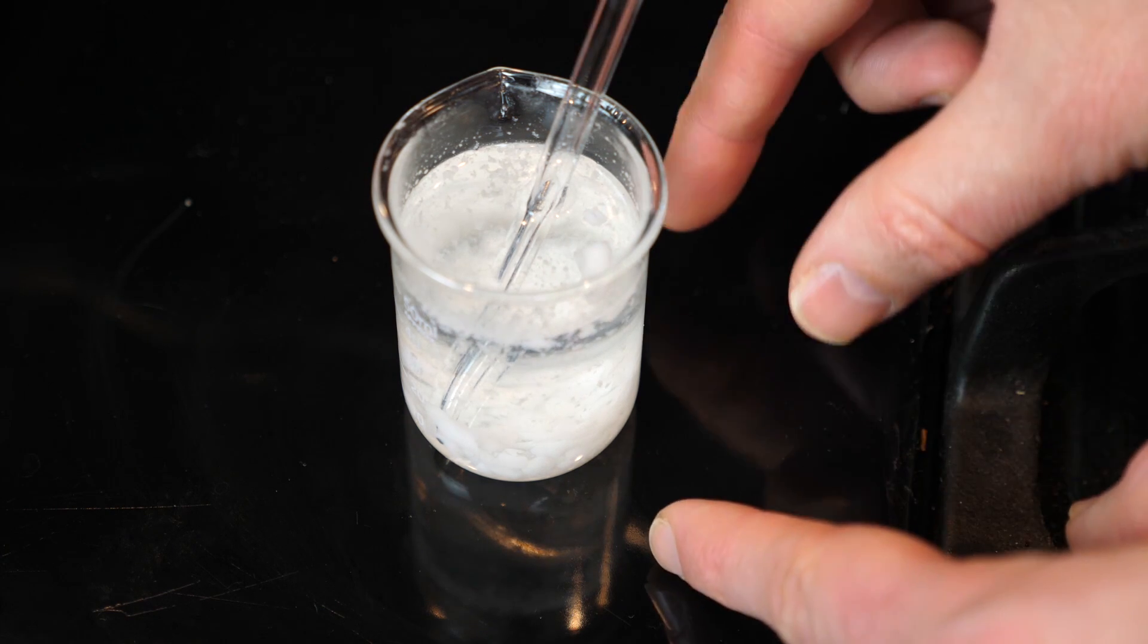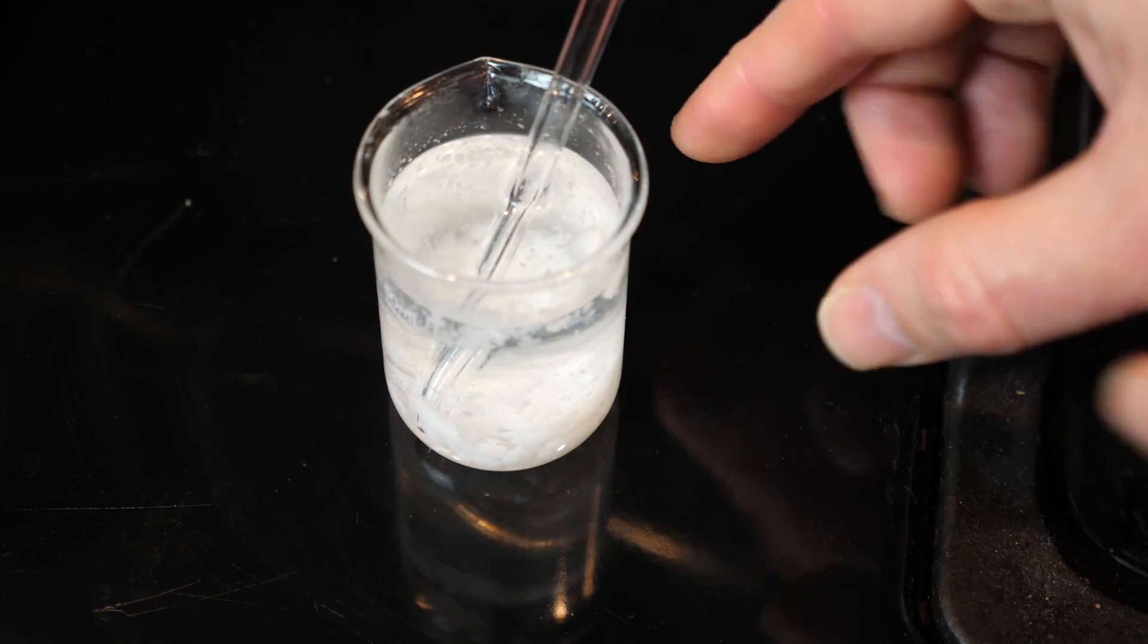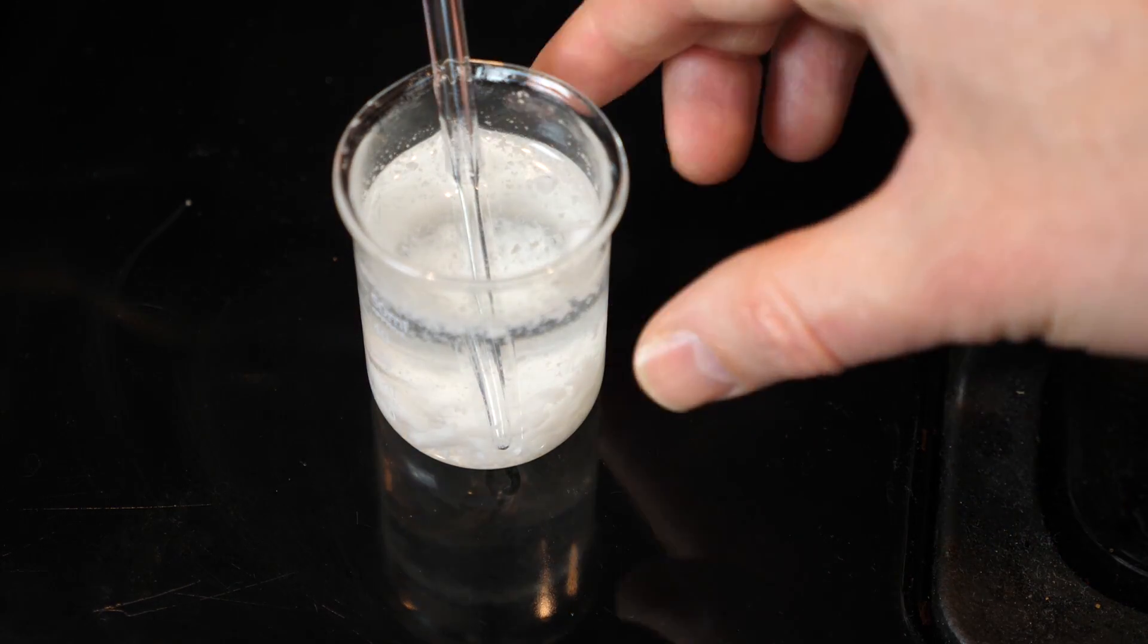So they're still long chains and they're not coiled back into their original shape. That's because the urea is keeping them apart. So now all I need to do is dilute the urea.